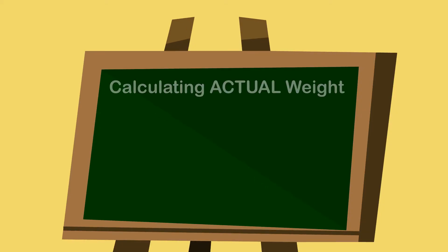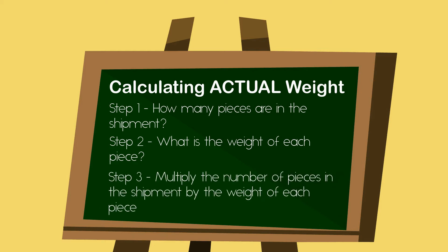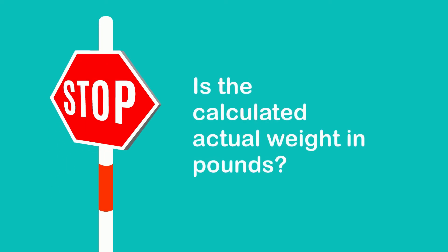To calculate the actual weight, you need to look at how many pieces are in the shipment and what is the weight of each piece, then multiply the number of pieces by the weight of each piece. That will give you the actual weight. In trucking, all weight must be in pounds.